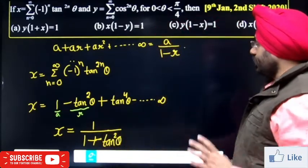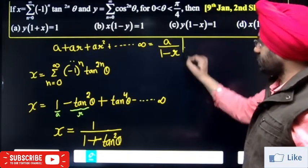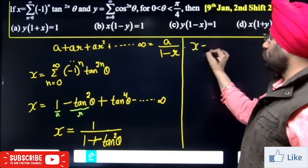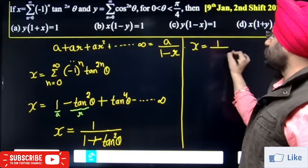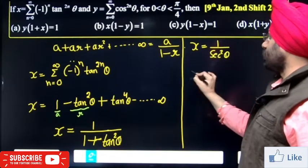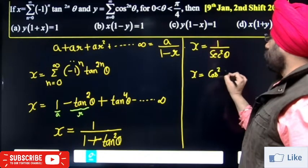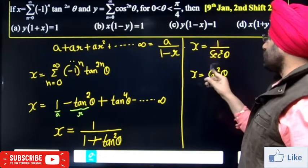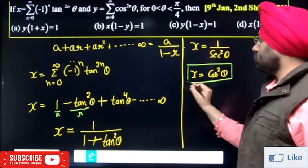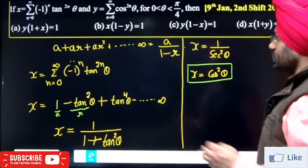So the value of X is equal to 1 upon 1 plus tan²θ. Using the trigonometric identity, this simplifies to cos²θ. So value of X equals cos²θ.